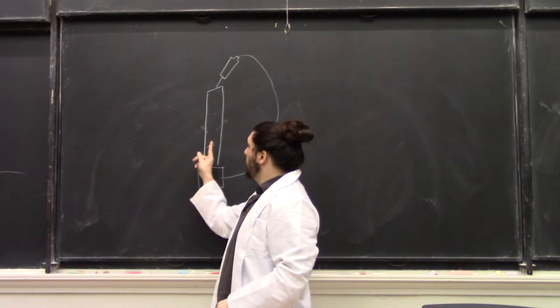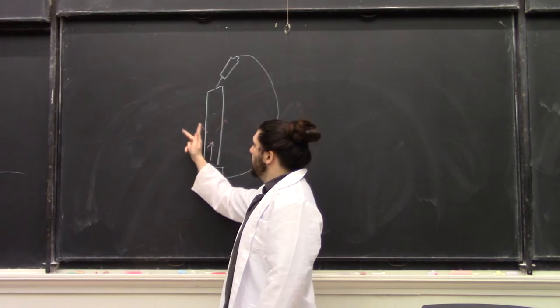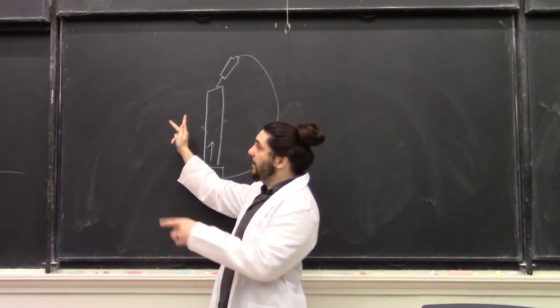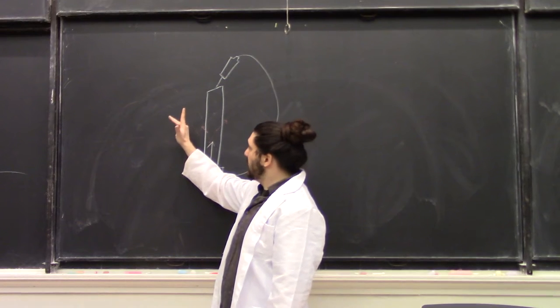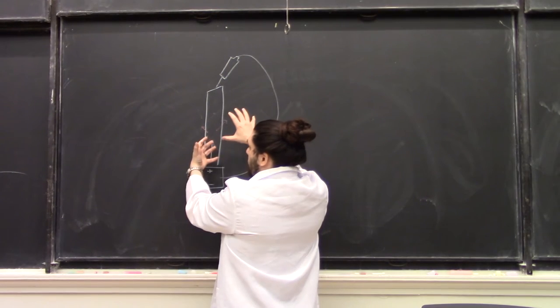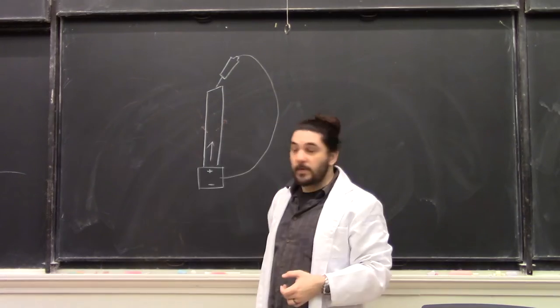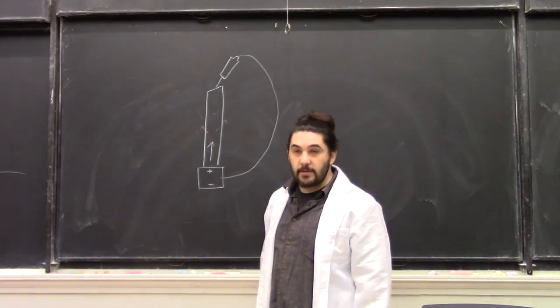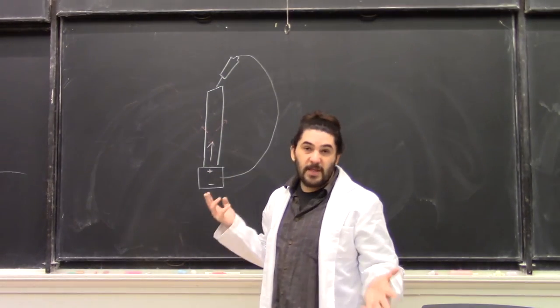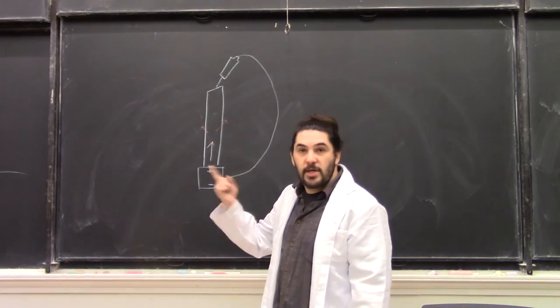On this side we once again have current pointing up. We have a magnetic field pointing up and to the left, so there's going to be a force pointing out of the board. So the rod is going to want to spin, and since the rod spinning is symmetric, no matter how much it spins it's always going to be in the exact same configuration, so it'll just keep spinning and spinning and spinning.